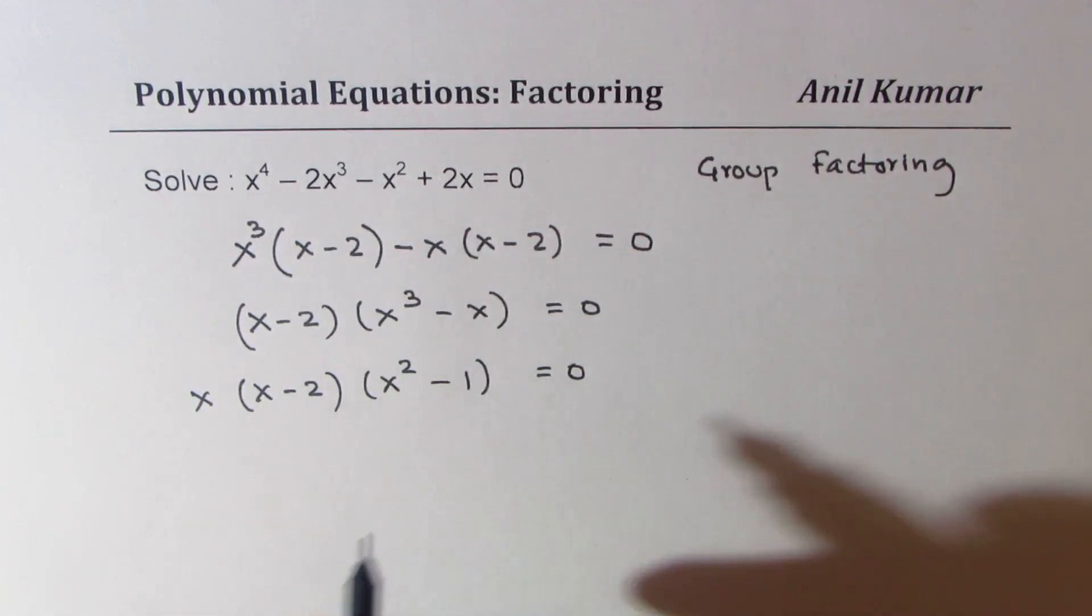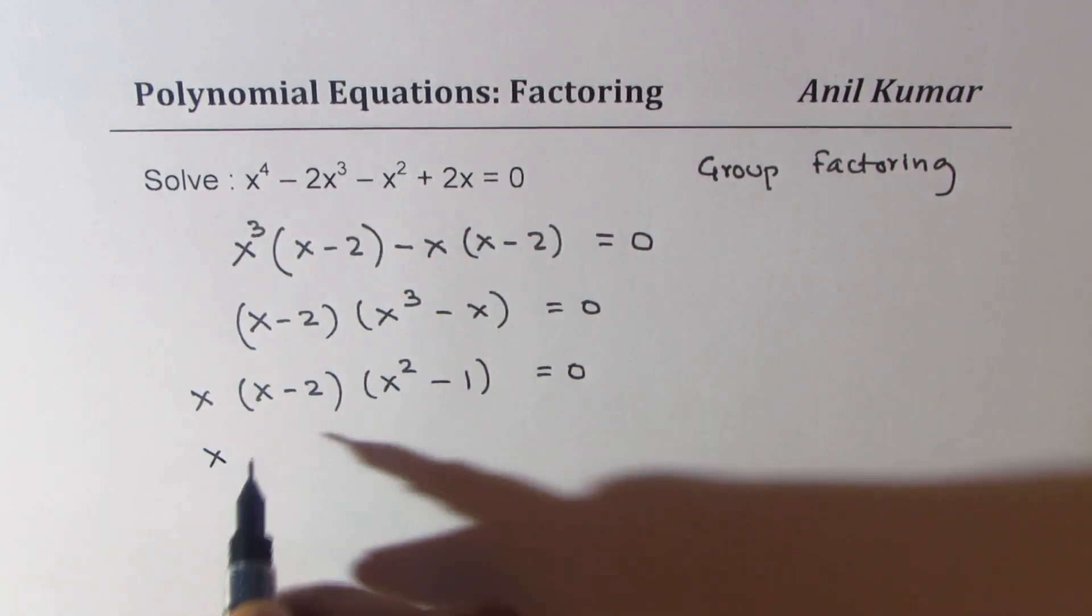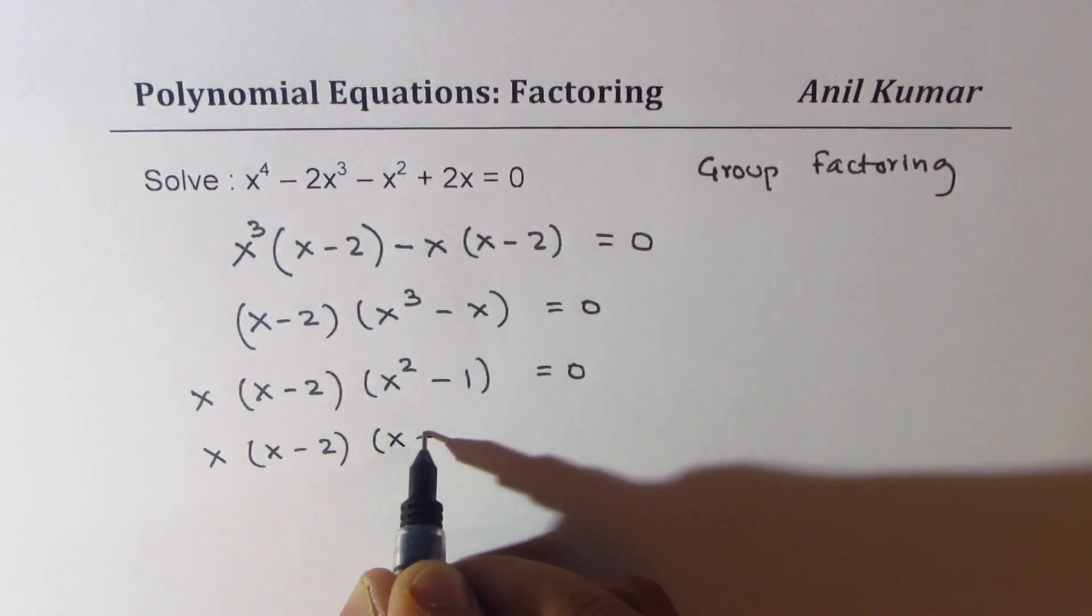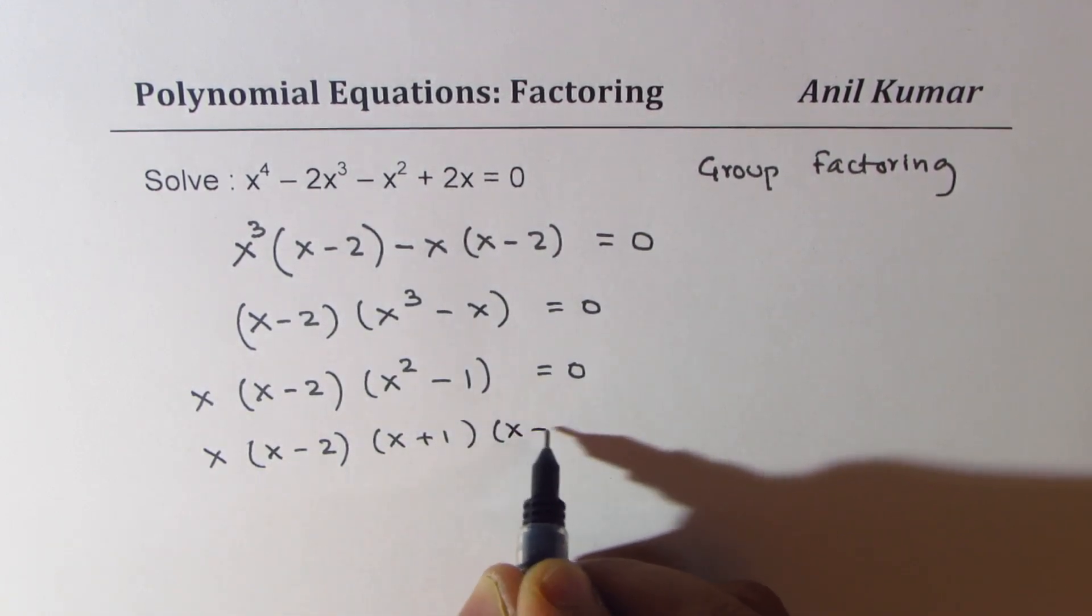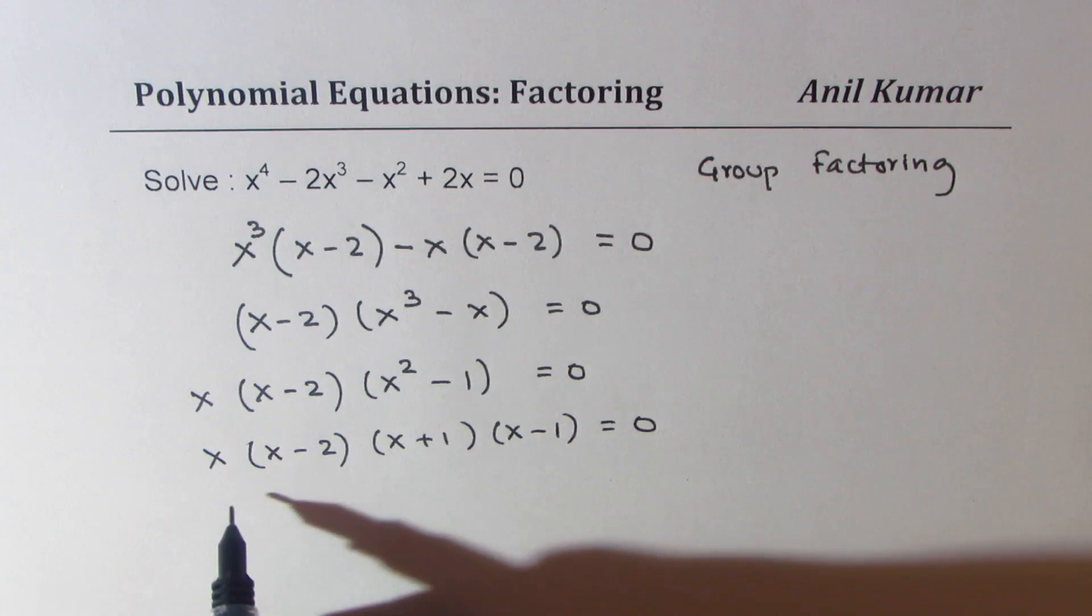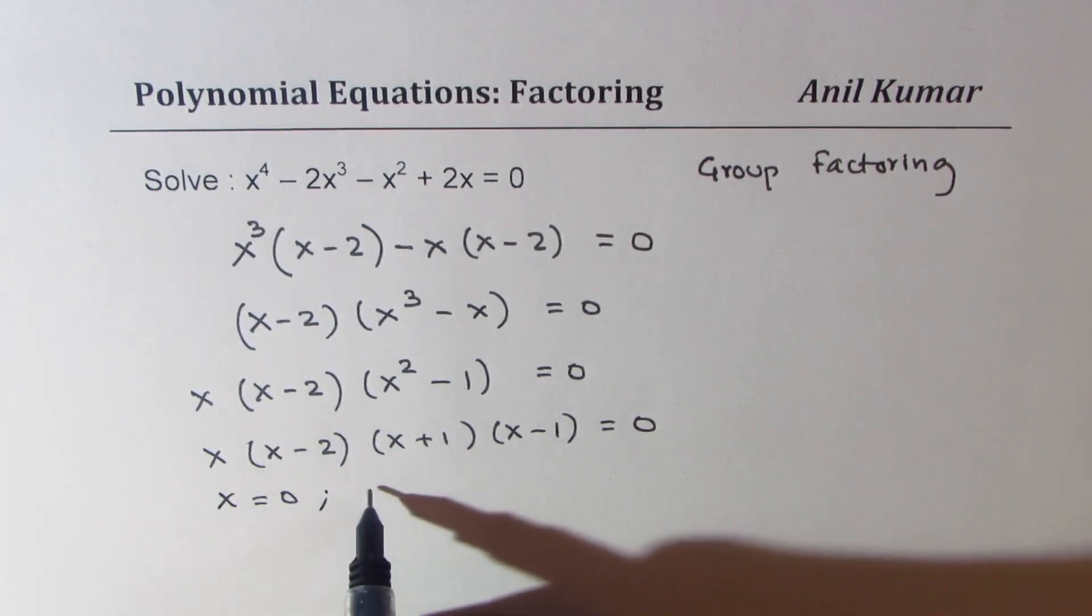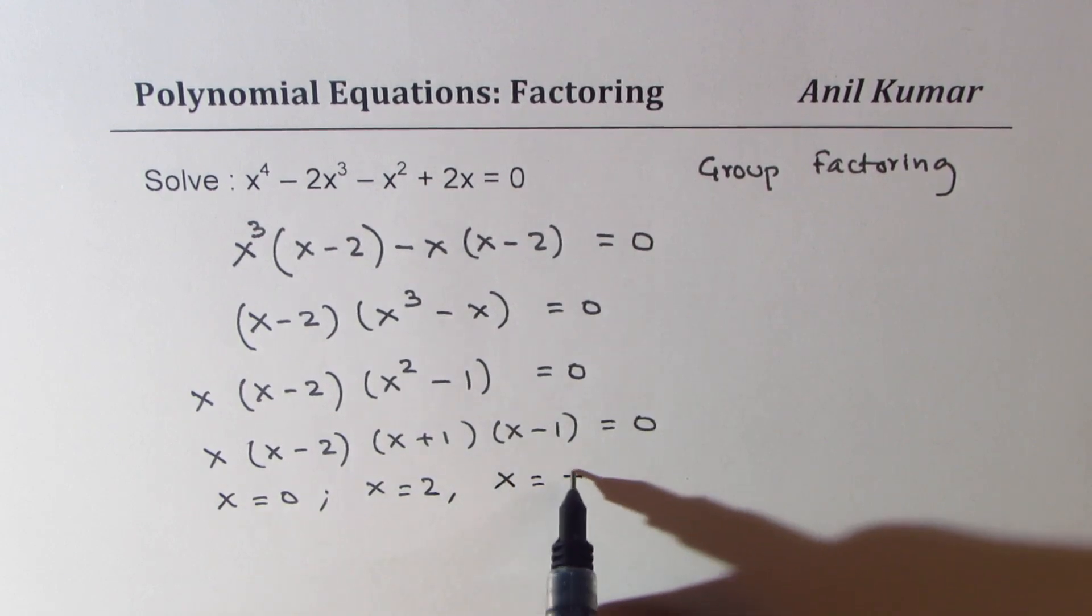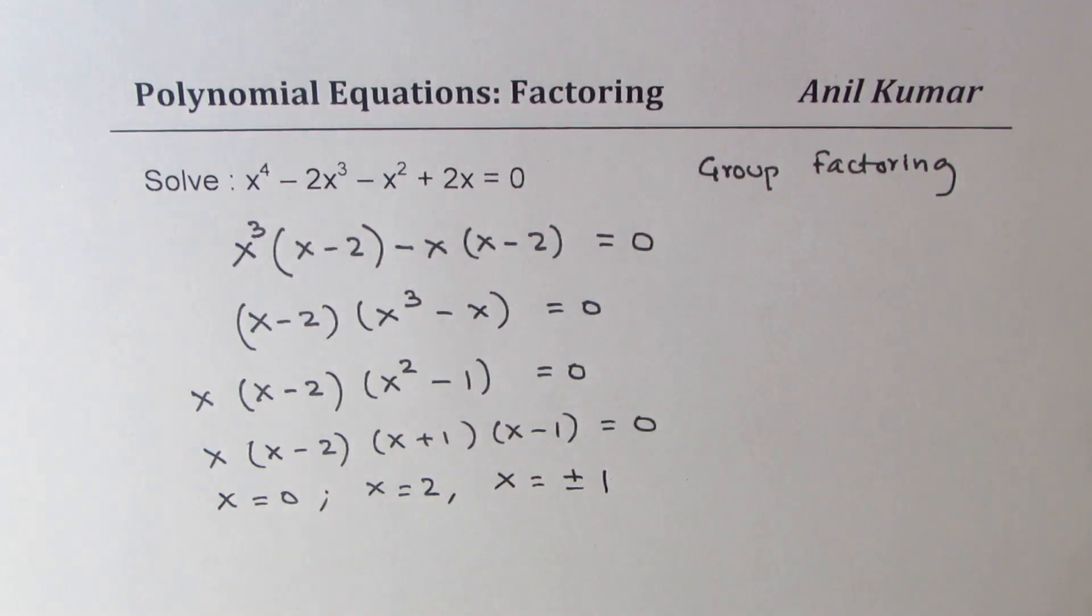x squared minus 1 can be factored. It's difference of squares. So what we get here is x plus 1 times x minus 1 equal to 0. So we have x equals to plus and minus 1.